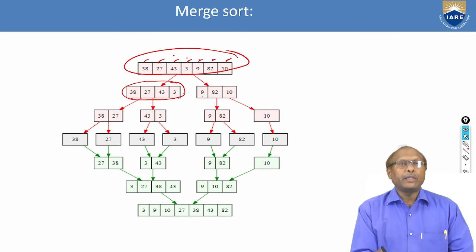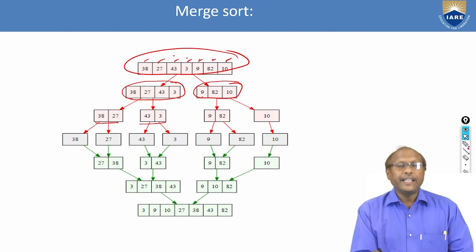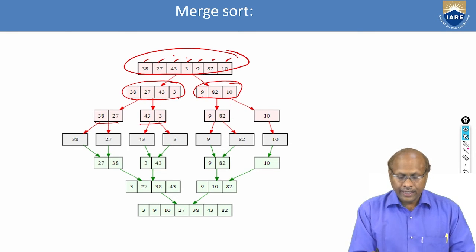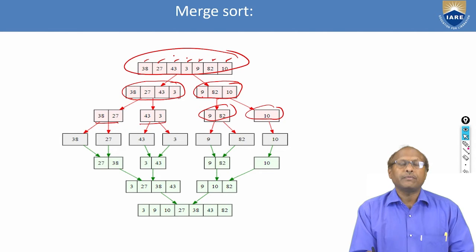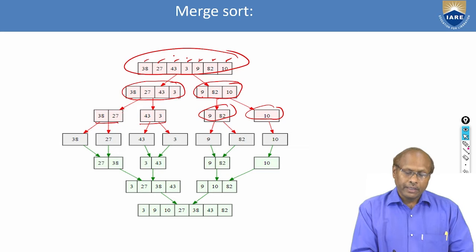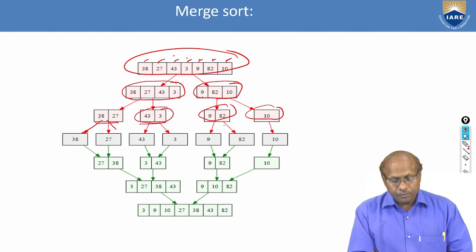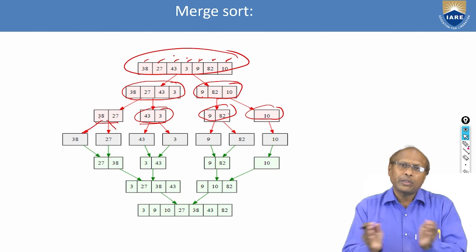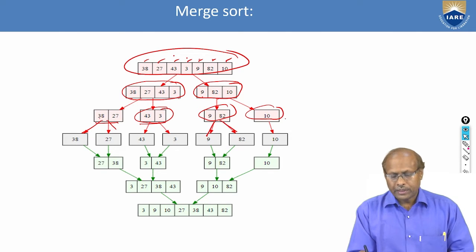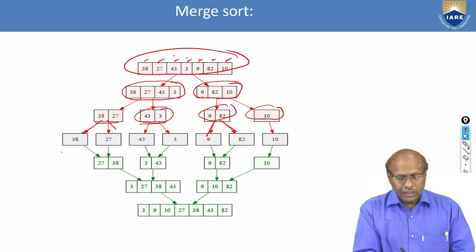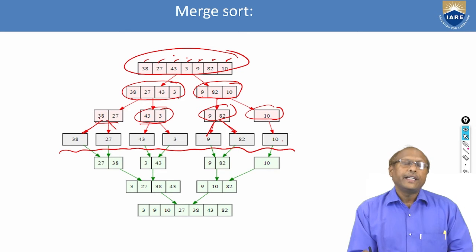Again, these four will be divided into two parts — two in the first half, two in the second half. Similarly, for the three elements on the right: when there are an odd number of elements, one half will always be one more than the other. So 9 and 32 come in the first part and 10 comes in the second part. This process continues — 38 and 27 will also divide. This will continue until you get single elements. 10 is already a single element, so you stop there.